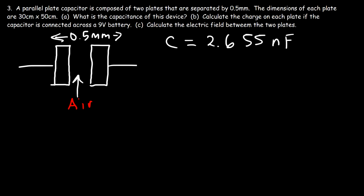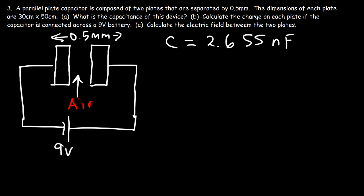Calculate the charge on each plate if the capacitor is connected across a 9-volt battery. Let's talk about how a capacitor becomes charged. Before connecting to the battery, the two plates are electrically neutral. Once connected across a 9-volt battery — positive terminal on one side, negative on the other — electrons are attracted by the potential difference. Electrons flow toward the positive terminal, being pumped from one plate to the other. That's how a battery charges a capacitor and how a capacitor stores electrical energy.